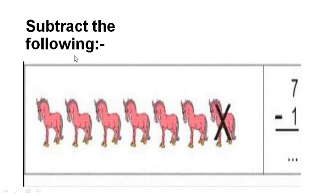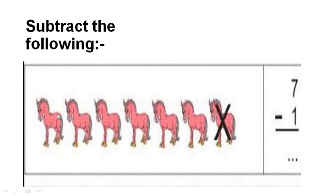Subtract the following: 7 minus 1. There are 7 objects. Out of that, I have to reduce 1, as our sum is 7 minus 1. If I want to know the difference, I count the remaining objects: 1, 2, 3, 4, 5, 6. We have 6 objects remaining, so we write it in the given box.